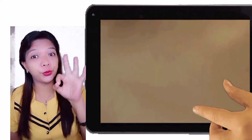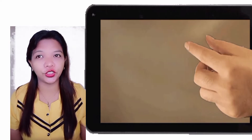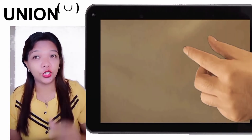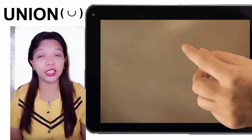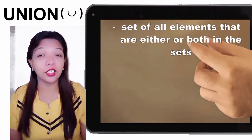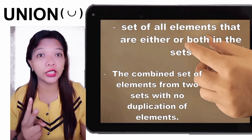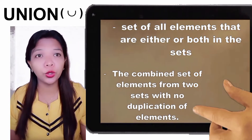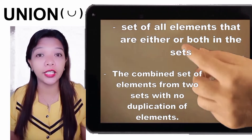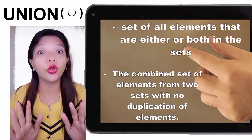Lesson Number 3: Union and Intersection. For Union, we use a specific symbol. Union is a set of all elements that are in either set — it is the combined set of elements from two sets with no duplication, meaning we collect all elements without copying or repeating any.